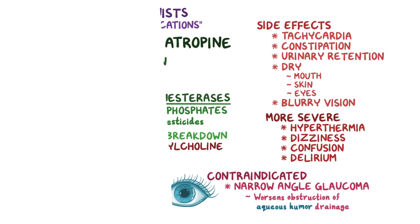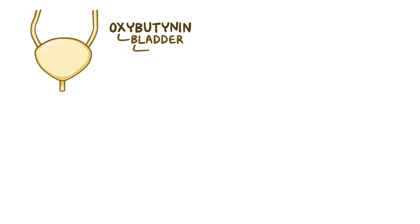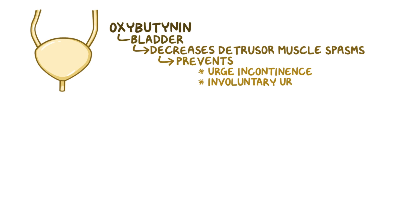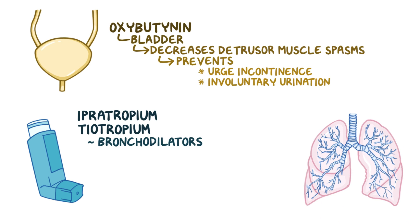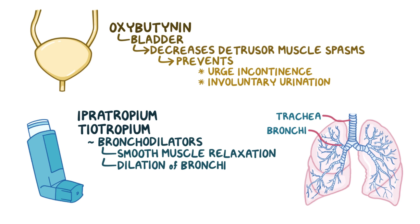Other muscarinic antagonists are more effective at targeting certain organs. Oxybutynin works on muscarinic receptors in the bladder, where it decreases detrusor muscle spasms and prevents urge incontinence — or involuntary urination due to an overactive bladder. Ipratropium and tiotropium are well-known muscarinic antagonists that work as bronchodilators. Given via inhalers, they enter the lungs and bind to muscarinic receptors on the tracheal and bronchial smooth muscles, causing smooth muscle relaxation and dilation of the bronchi, making them effective in relieving COPD and asthma.